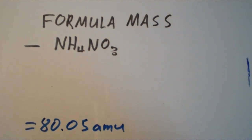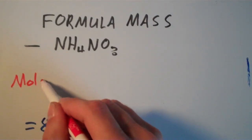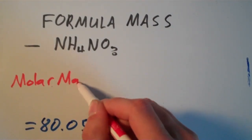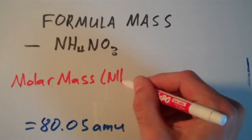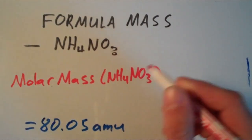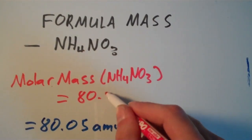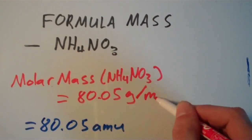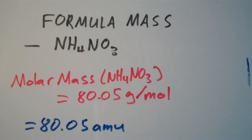So the molar mass of ammonium nitrate is equal to 80.05 grams per mole. So now we have an expression for the molar mass of this compound. So if I have one mole of ammonium nitrate, that mole of ammonium nitrate weighs 80.05 grams. And this is useful because this molar mass can be used in conversion factors.